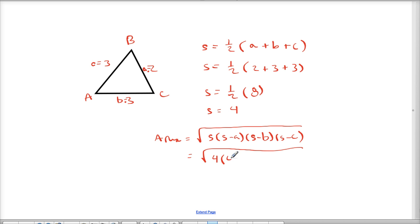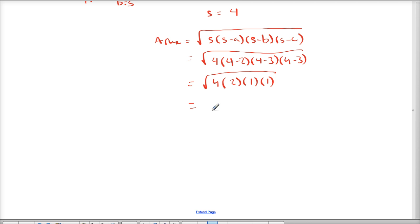S minus a will be 4 minus 2. S minus b will be 4 minus 3. And s minus c is 4 minus 3 as well. So then when we plug this in we get 4 times 2 times 1 times 1, which is the square root of 8.